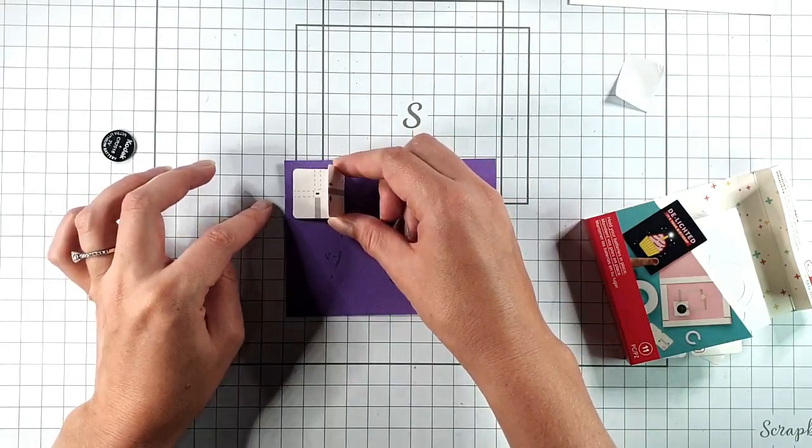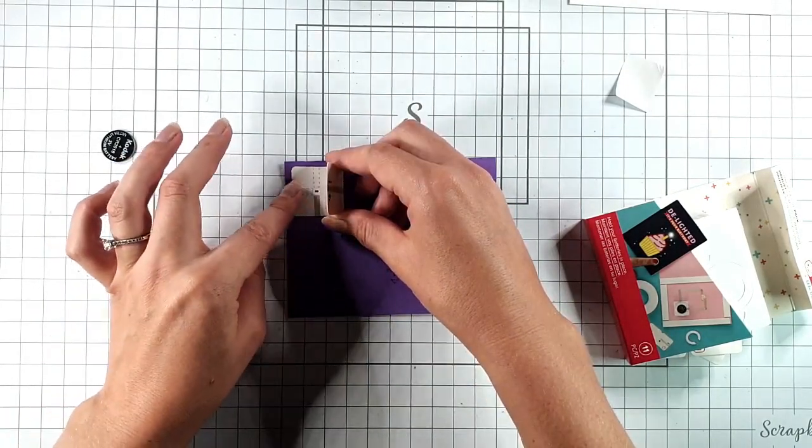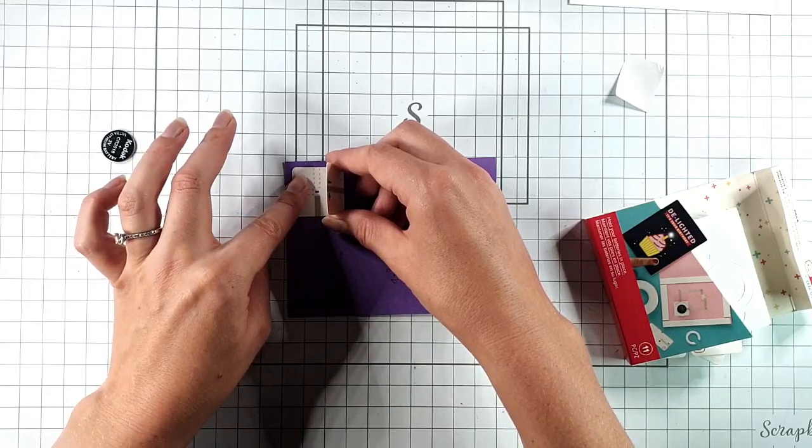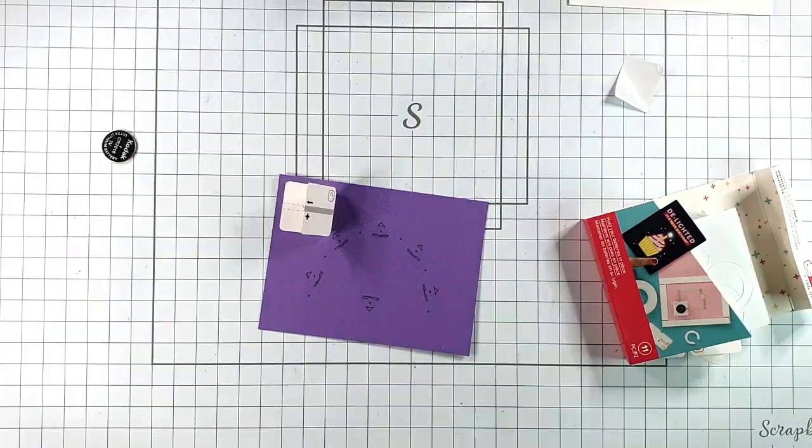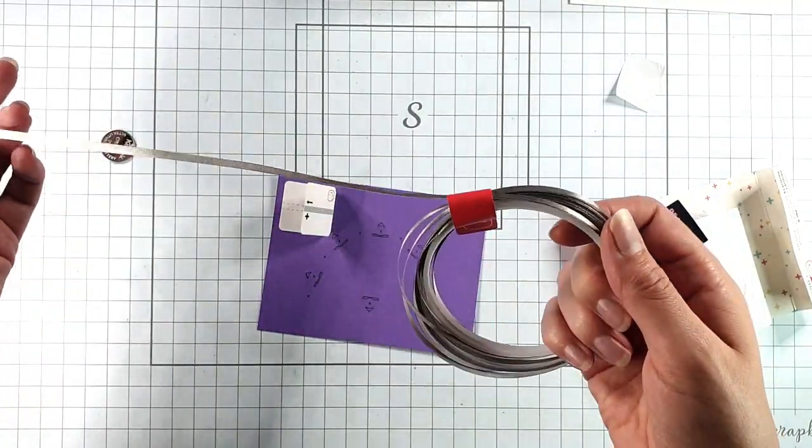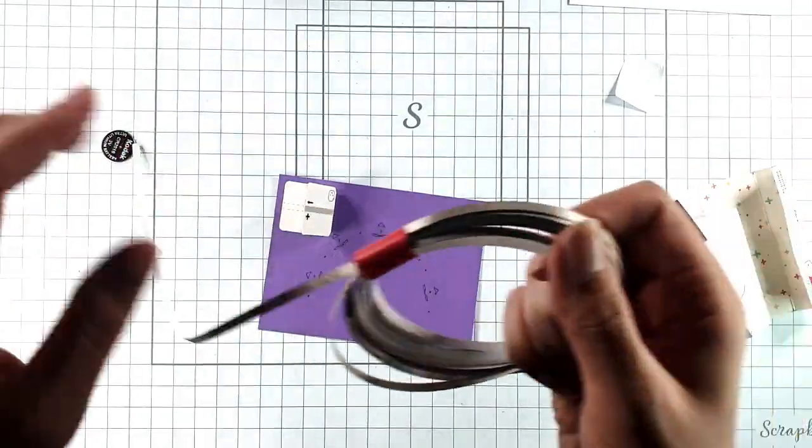I'm going to add my battery holder in the corner. I don't want it to be too close because I don't want it to show under the other layer of cardstock. I'm going to pop it here. So then I'm going to use my conductive fabric tape. You get 10 meters of this in a roll so it lasts for ages.